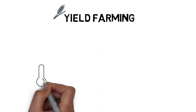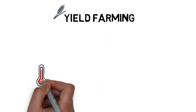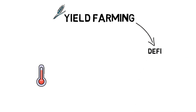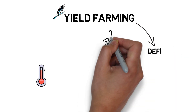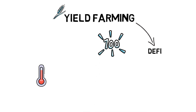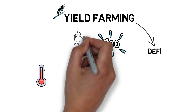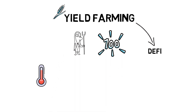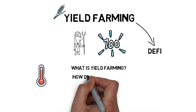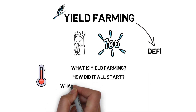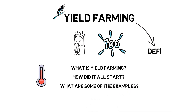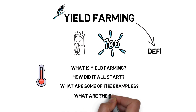Yield farming is one of the hottest topics in decentralized finance, and there is a high chance you may have already heard something about insane returns that some of the yield farmers are making. So what is yield farming? How did it all start? What are some of the examples of yield farming? And also what are the risks involved?